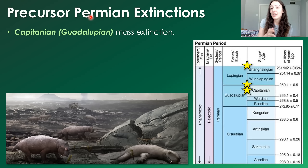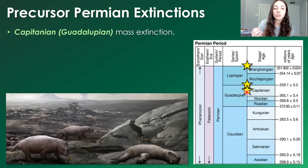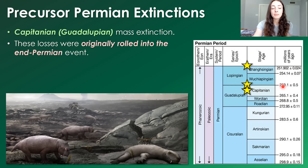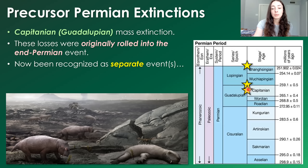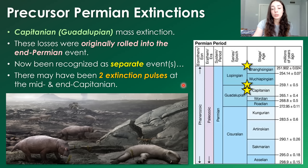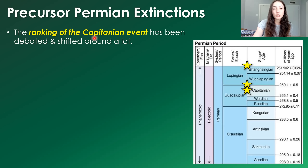This brings us to the Permian, which went from around 299 million years ago until 252 million years ago. Within the Permian there were two to three mass extinctions. The first major one is the Capitanian or Guadalupian mass extinction around 259 million years ago. These losses were originally rolled into the end-Permian event, causing us to overestimate the end Permian's magnitude. We now recognize the Capitanian as a separate event — or potentially two separate extinction pulses.